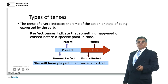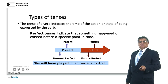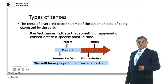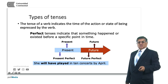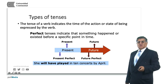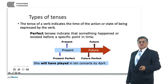We also have the future perfect. For example: she will have played in ten concerts by April. We are using two auxiliaries in conjunction — will is the future, have is the perfect auxiliary, and played is the past participle form. This indicates an action that will be finished by a point in time in the future.